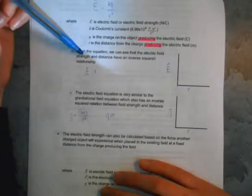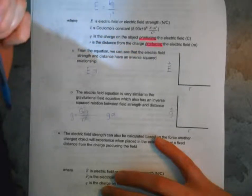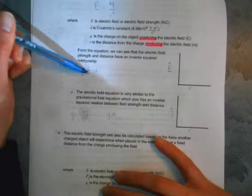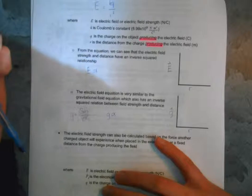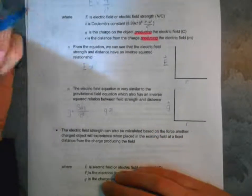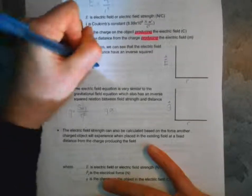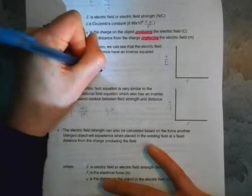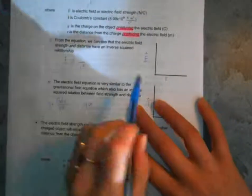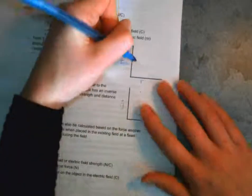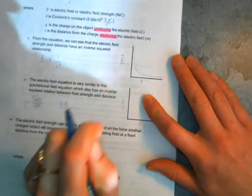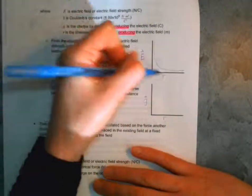From E = kq / r², E is proportional to 1 / r². That's the same as saying y is proportional to 1 / x², with electric field on the y-axis and r on the x-axis. So we're going to see that same shape of graph as we saw with the electric force — the inverse squared shape.